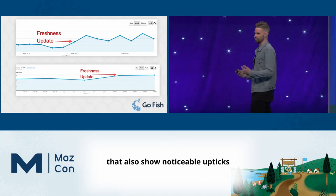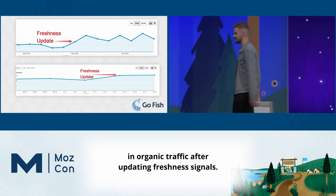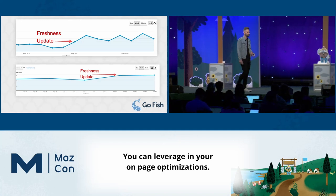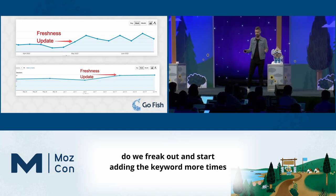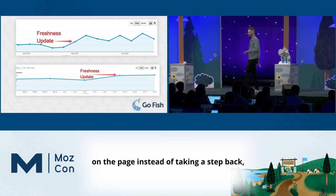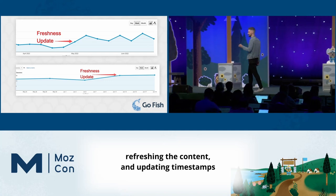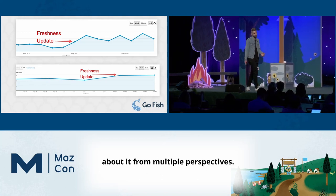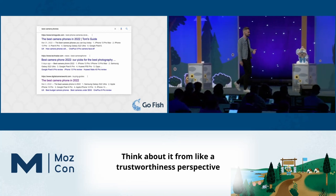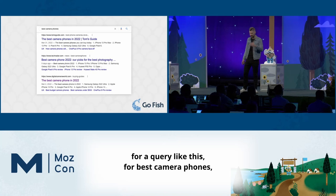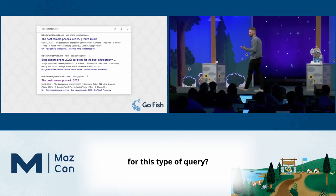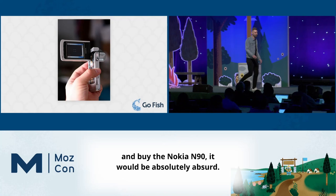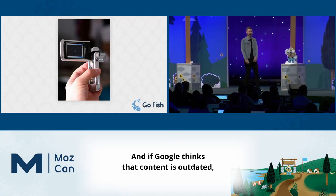We then repeated this test on other types of content on our own site and pretty consistently saw noticeable upticks in visibility and traffic. Search Pilot has also done studies showing noticeable upticks in organic traffic after updating freshness signals. This really shows us that freshness is an on-page tactic you can leverage. How many times when content declines do we freak out and start adding the keyword more times, instead of just refreshing the content and updating timestamps? For a query like 'best camera phones,' is Google really going to trust older content recommending the Nokia N90?